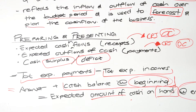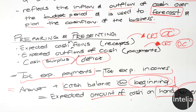Cash budgeting is similar to the normal budgets we spoke about in the last two videos, except this one focuses on the inflows and outflows of cash. We're basically trying to plan, monitor, and control the liquidity of a business — to see clearly the inflows and outflows of cash, how much we expect to receive, how much we expect to pay out, and whether we realize a surplus or a deficit at the end.